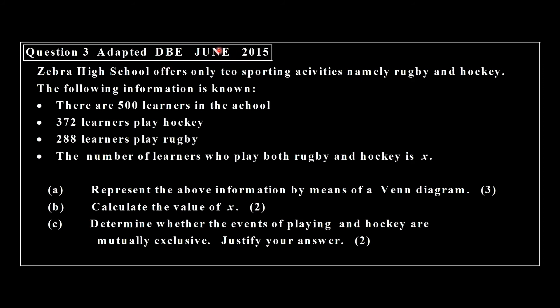This is the third question. It's adapted from the June 2015 paper. Again here we have a question to represent it in a Venn diagram. Calculate the value of x. Actually not a difficult one. There are only two events. And then there's a question to do with mutually exclusive. Let's look at the solution. This is the Venn diagram based on the given information.